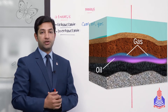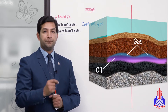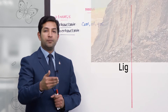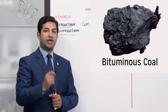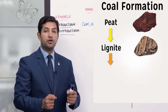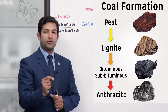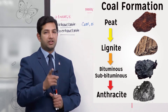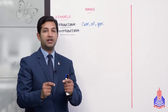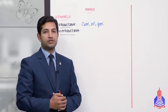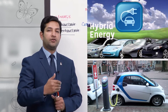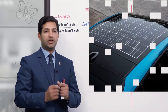کوئلے کی formation کی بات کریں تو یہ peat سے شروع ہو کر lignite، پھر sub-bituminous، bituminous اور پھر anthracite میں convert ہوتا ہے۔ اس transformation میں کئی لاکھ سال چاہیے۔ ہم اسے کتنی تیزی سے ختم کر رہے ہیں اس پر غور کریں۔ یہی وجہ ہے کہ دنیا اب alternative resources کی طرف جا رہی ہے۔